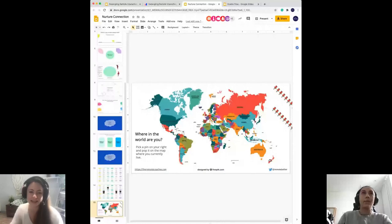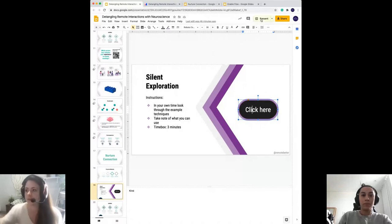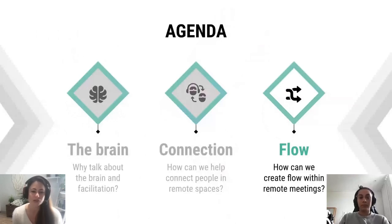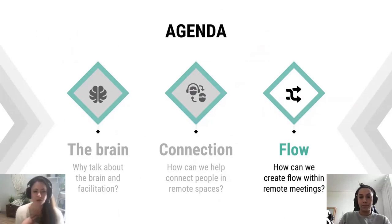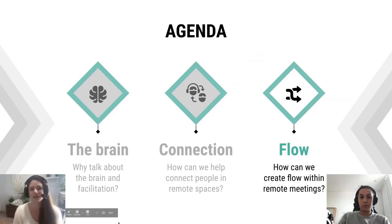We're going to transition back to the main deck and will share our slide deck with you afterwards — you're welcome to reuse these. Those are some practical ways to nurture connection in remote spaces. Just to recap where we've been: we started speaking about the brain and the conditions we'd like to activate so people can do high-quality thinking, then we spent time thinking about connection — what happens when we don't feel connected, and how facilitators can help. Now the last part of our talk: we're going to speak about flow — how to create that ease of movement through a meeting, because often remote meetings feel jerky and stuck.